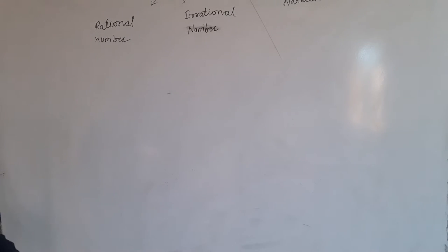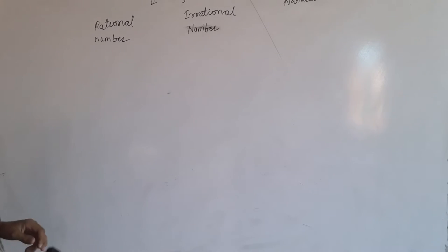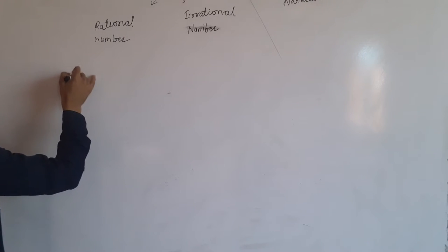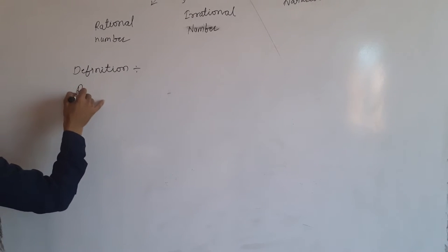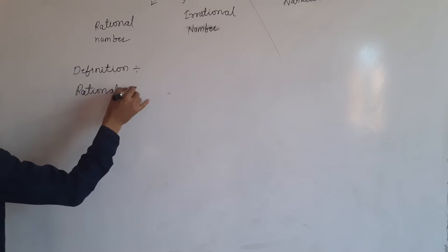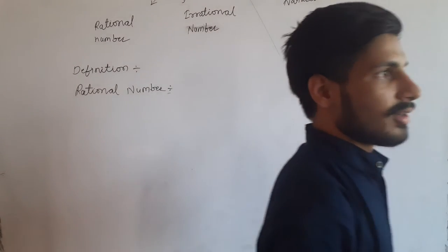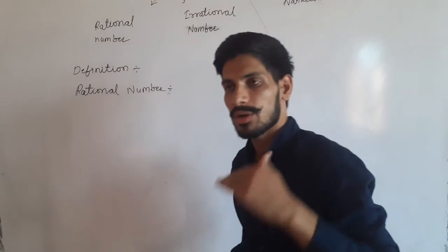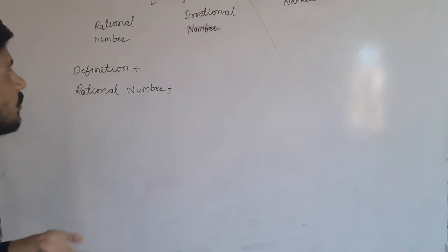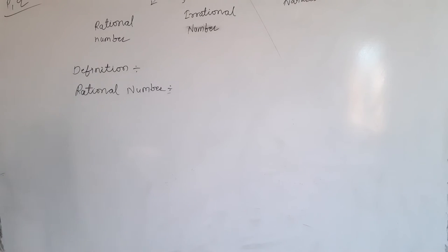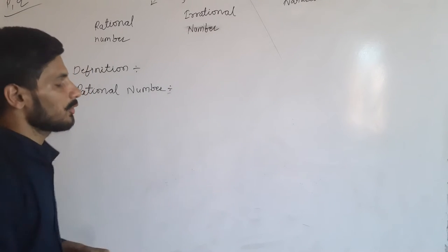So let's write the definition of rational numbers. Rational numbers are numbers that can be written in the form of P upon Q, where P and Q are numbers which can be positive or negative. We are also studying about rational and irrational numbers in 8th class.